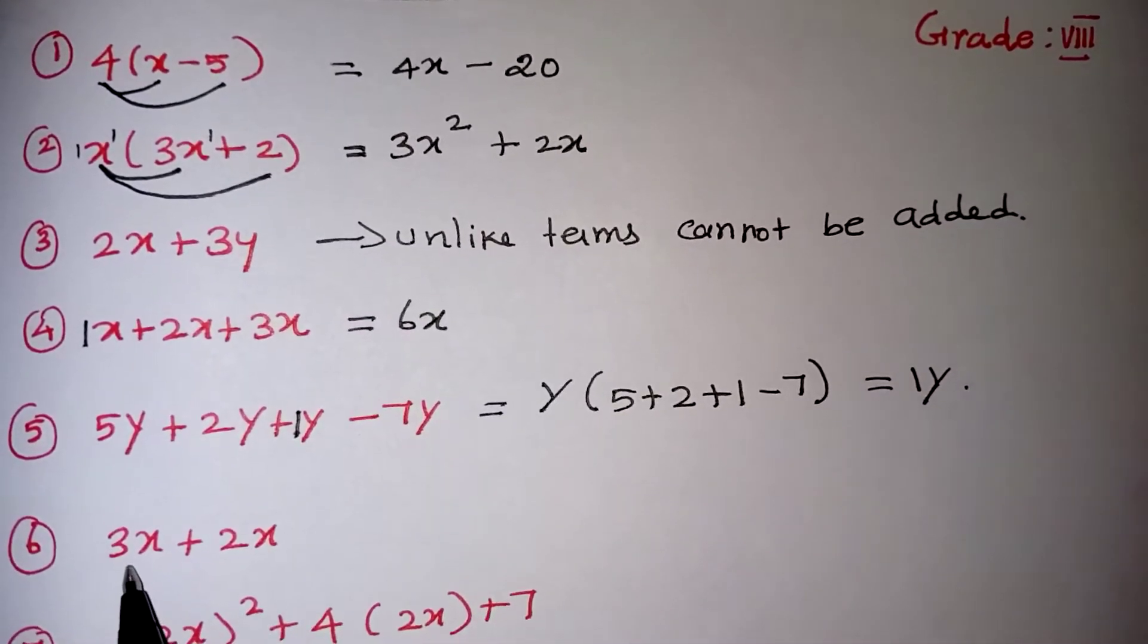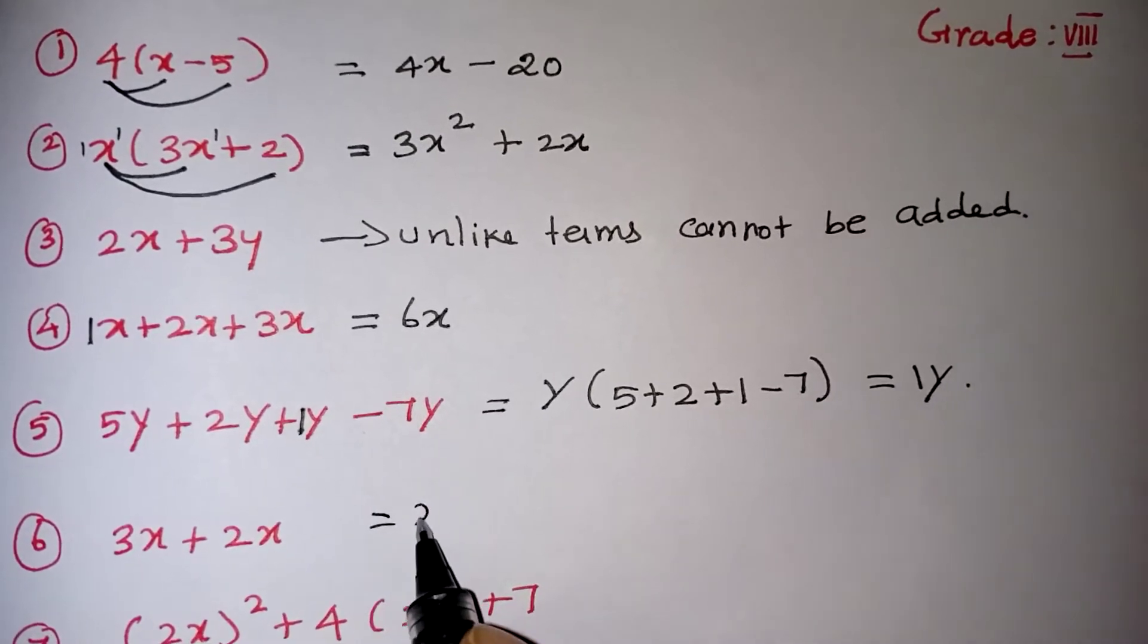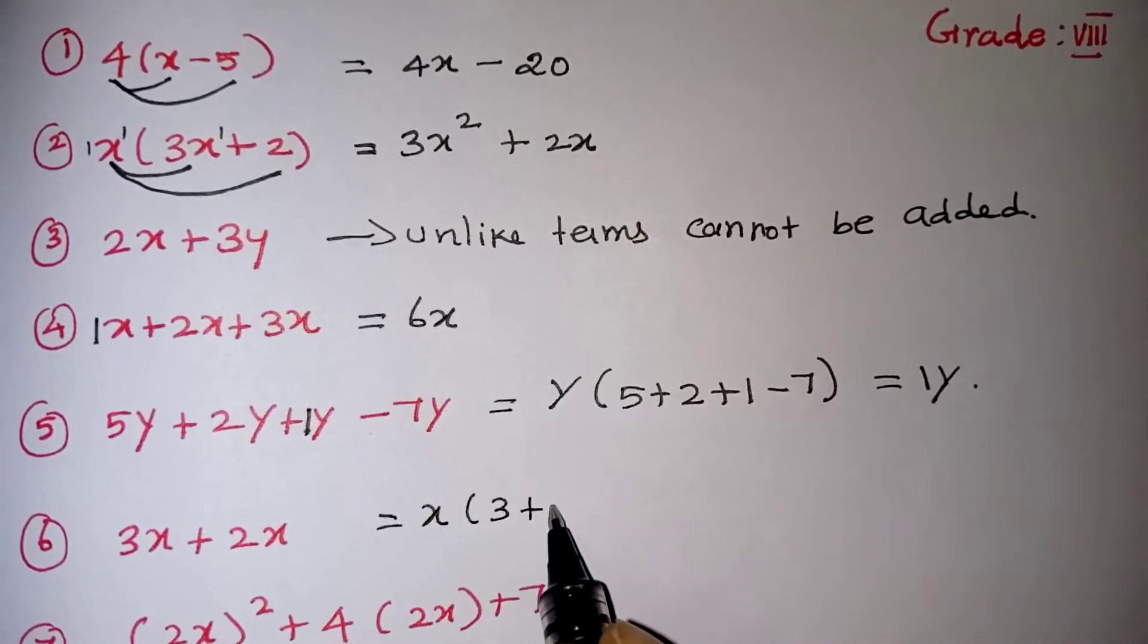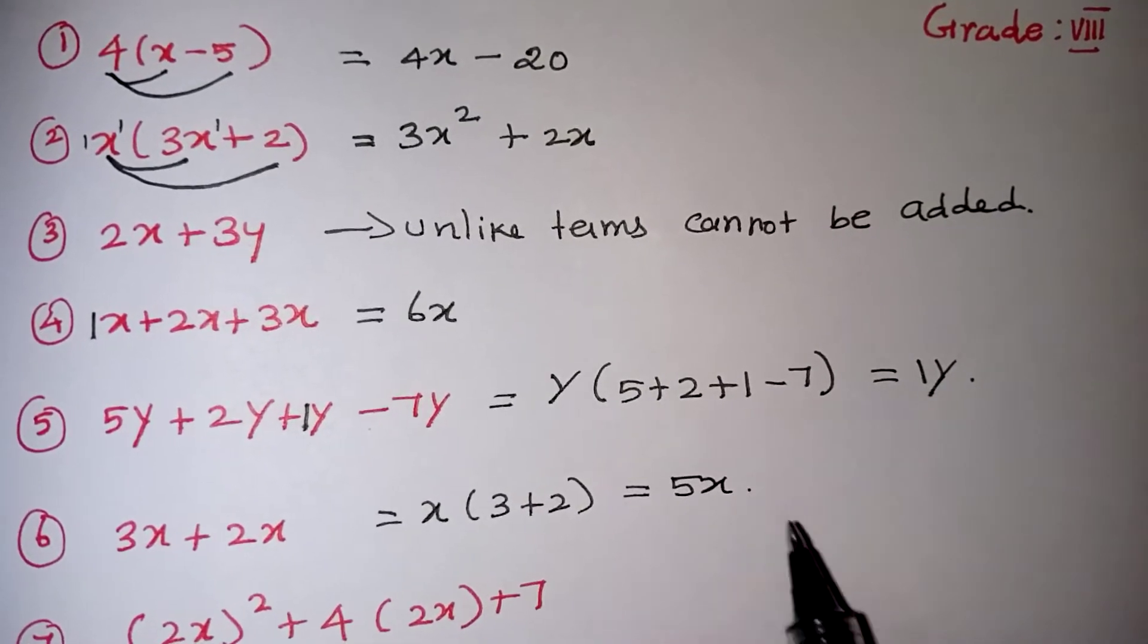Coming here, 3x plus 2x. Again we can take the x outside. 3 plus 2. 3 plus 2 will give you 5. 5 into x. 5x is your correct answer.